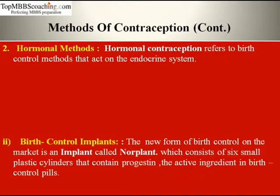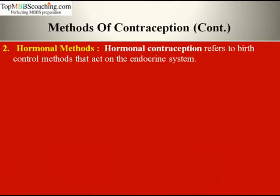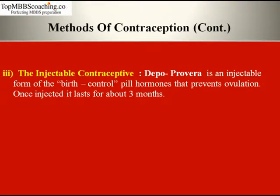Next is birth control implants. A newer form is an implant called Norplant, which consists of 6 small plastic cylinders containing progestin, the active ingredient in birth control pills. Norplant prevents ovulation and thickens cervical mucus so sperm cannot enter the uterus. These 6 cylinders are inserted directly under the skin of the upper arm in a surgical procedure, and once implanted, Norplant is effective for 5 years. A majority of women using it experience irregular menstrual bleeding.